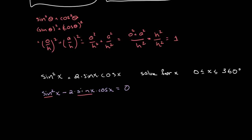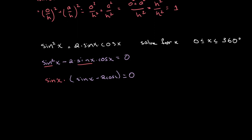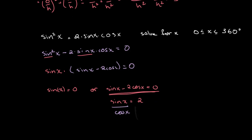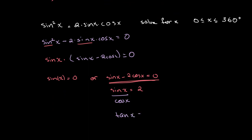We can take sine of x common in both places, so we get sine of x times the quantity sine of x minus 2 cosine of x, equal to 0. From this we get that either sine of x is equal to 0, or sine of x minus 2 cosine of x is equal to 0. Using our identity we can further simplify: sine of x equals 2 cosine of x, and bringing cosine over, sine of x over cosine of x equals 2, therefore tan of x equals 2.